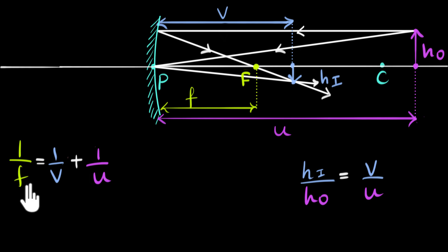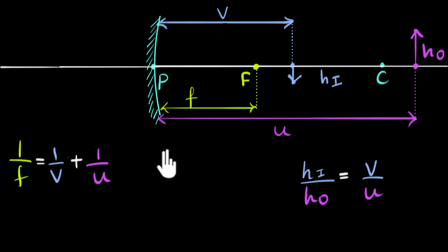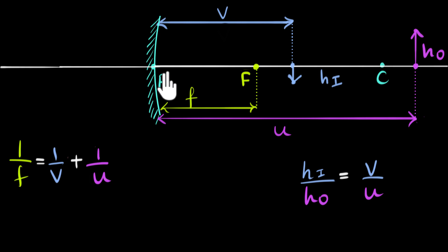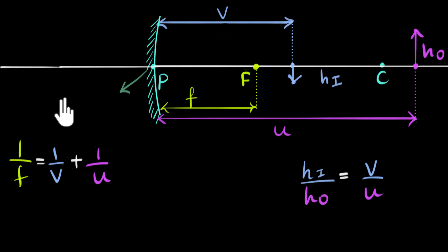The trick is this. Let's get rid of the rays — we don't need them. We'll imagine that the whole setup is on a graph sheet. Whenever we have a graph sheet, we have an x-axis and a y-axis. Our x-axis is going to be the principal axis. Wherever the x and y-axis meet, we call that the origin. So we're going to always choose our pole as the origin.